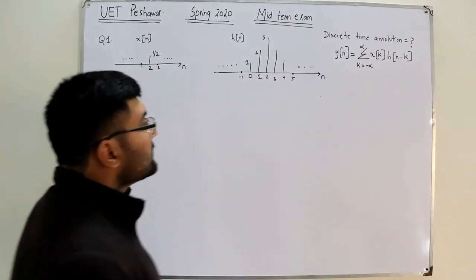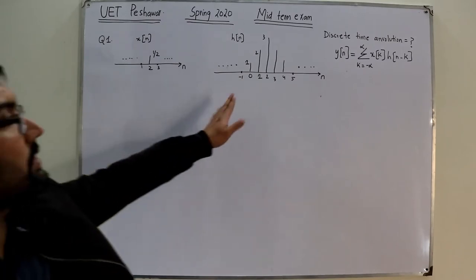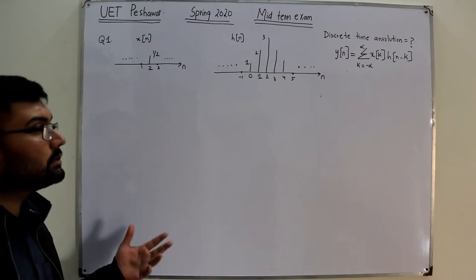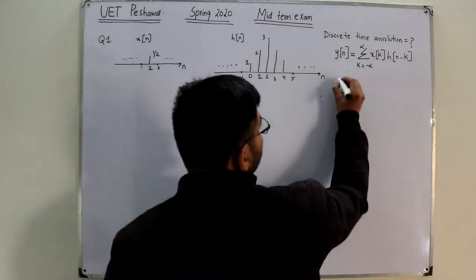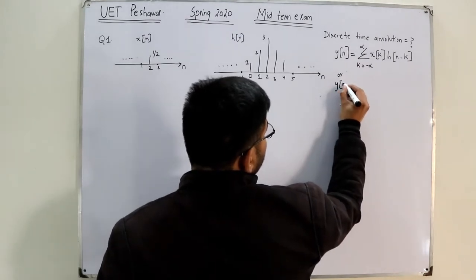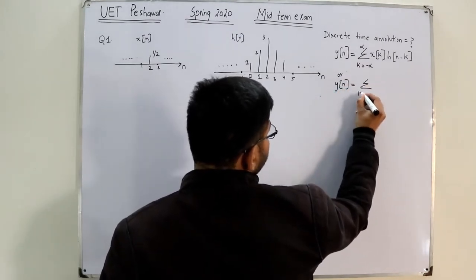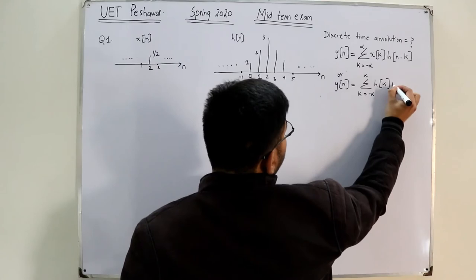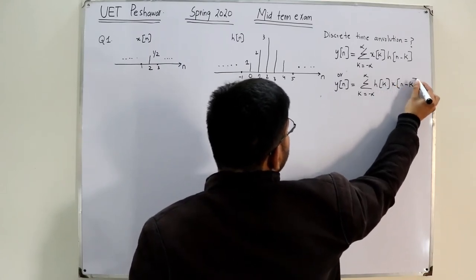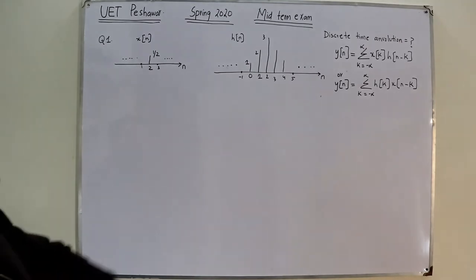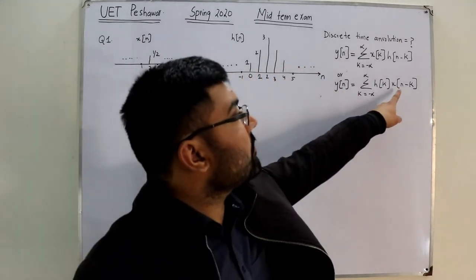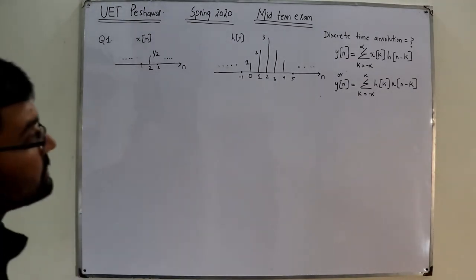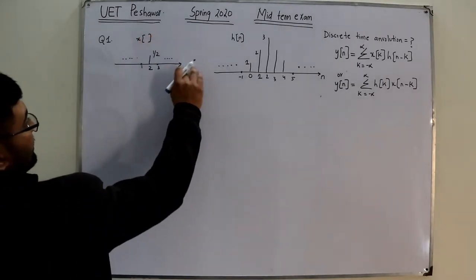This means you keep X of K constant and shift H of n minus K. But from the commutative property of convolution, y of n also equals summation K from negative infinity to positive infinity of H of K into X of n minus K. So you can keep H of K fixed and shift X of K. The first step is to change the variable.